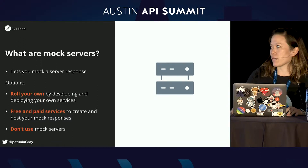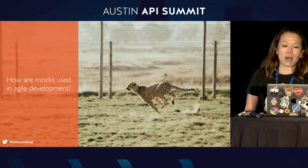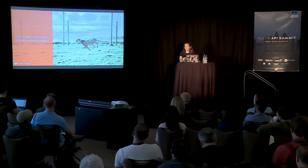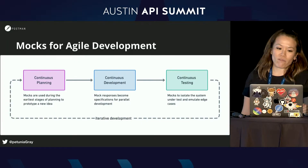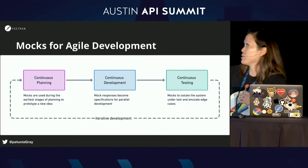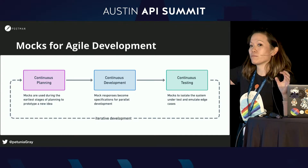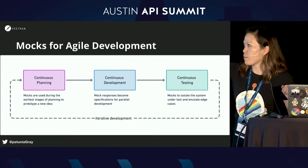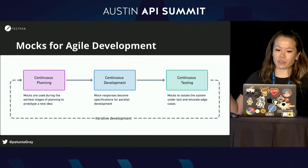A lot of teams use mocks in their dev process, and they can help you be more agile. When I'm talking about agility, I'm not necessarily talking about speed of development or velocity. It's also about the continuous cycle of iteration. With agile development, you start off with continuous planning, move on to continuous development, then testing, and hopefully you have some way to observe your results, and then loop it back so you can iterate and continuously improve.